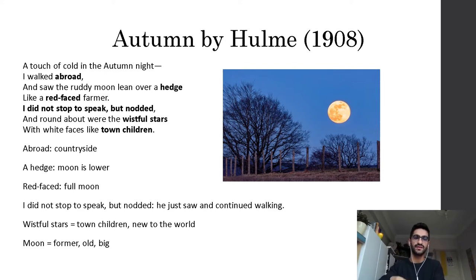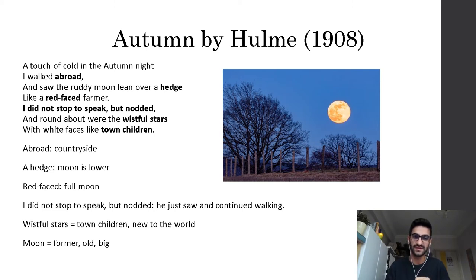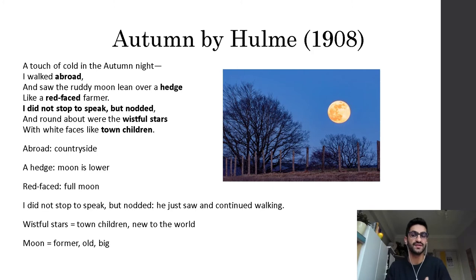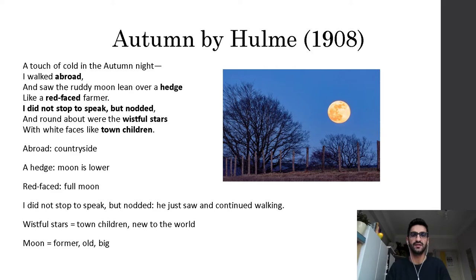The 'wistful stars' stand for town children — the speaker is outside in a small village outside the big city. He compares the wistful stars to 'white faces like town children,' which is a metaphor. The moon symbolizes oldness and maturity — it is large and old. The stars are small, symbolically not mature enough, while the moon is mature and big. As you can see, this is a very simple, very straightforward poem — the first and earliest example of imagist poetry.